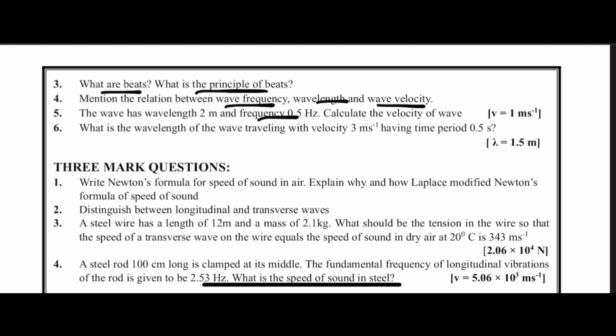of 2 meters and frequency 0.5 hertz, calculate the velocity of the wave. The answer is v = 1 m/s. And next one is what is the wavelength of the wave traveling with velocity 3 m/s having a time period of 0.5 seconds? The answer is λ = 1.5 m.